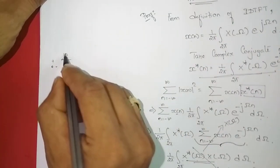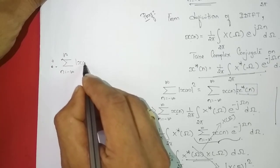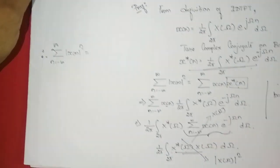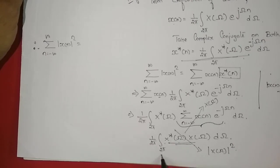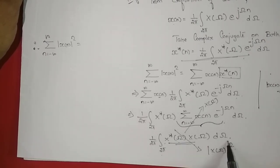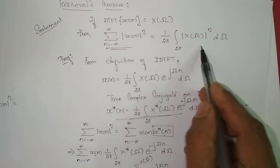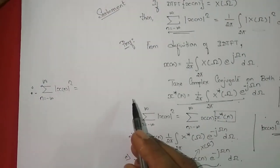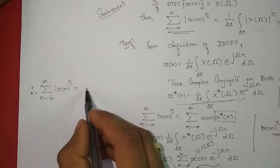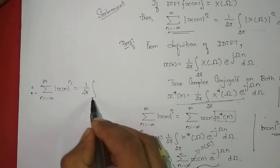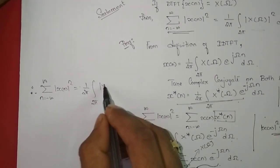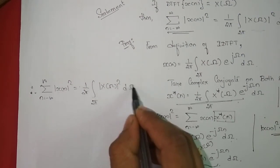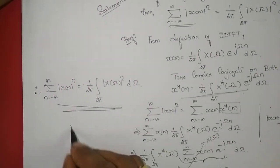Therefore, the summation from n equals minus infinity to infinity of the magnitude squared of x(n) can be written as 1 over 2π times the integral over 2π of the magnitude squared of X(ω) dω. That is what we needed to prove. So this completes the proof of Parseval's Theorem.